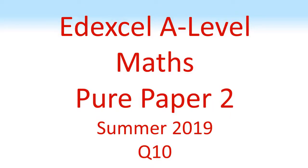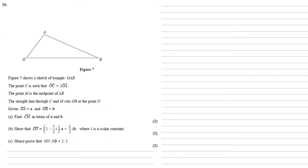Edexcel A Level Maths, Pure Paper 2, Summer 2019, Question 10. Figure 7 shows a sketch of triangle OAB. The point C is such that OC equals 2OA. The point M is the midpoint of AB. The straight line through C and M cuts OB at the point N. Given that OA equals A and OB equals B, we need to find CM in terms of A and B.